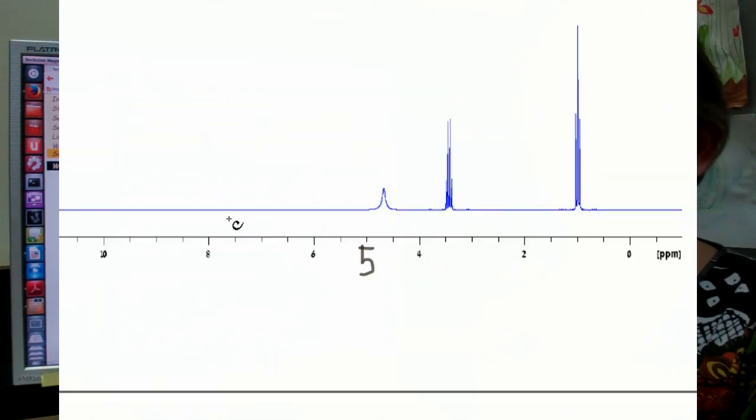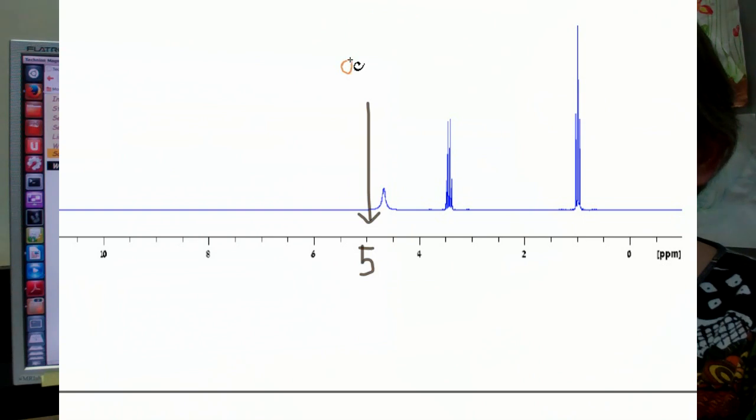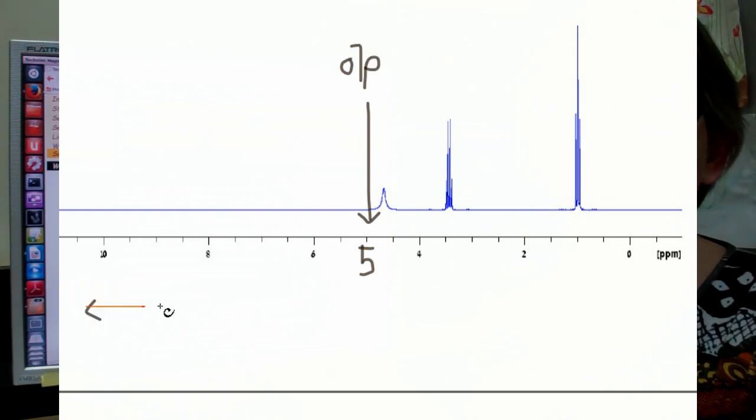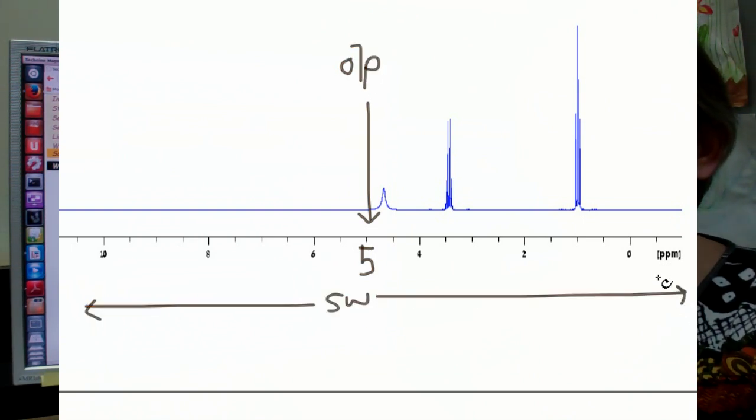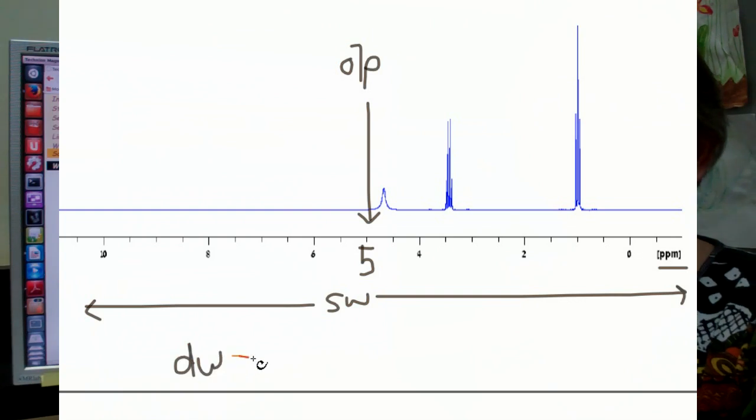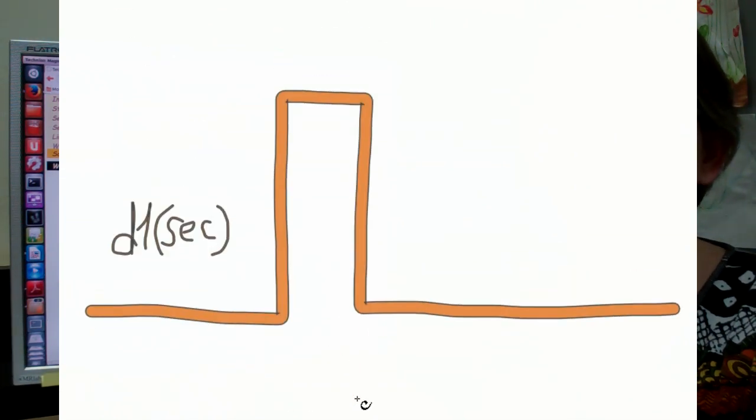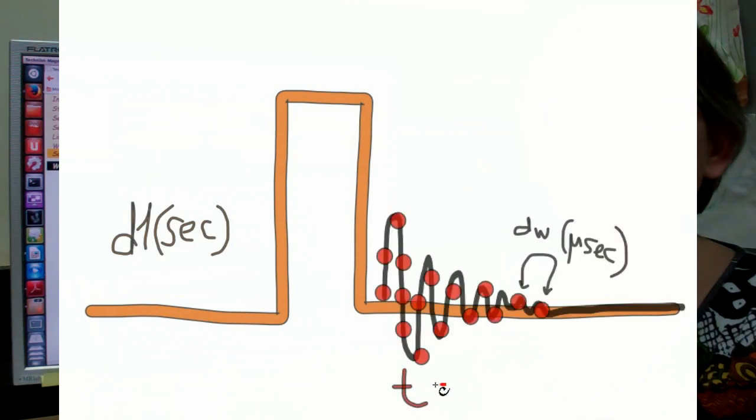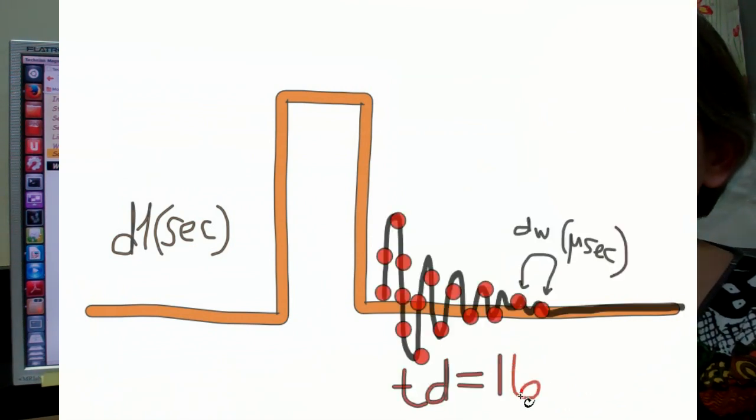Number 2, O1P, which sets the center frequency of your spectrum. Number 3, SW, which sets the spectral width in ppm. This will automatically determine DW, the digitization rate, according to 1 over twice the spectral width in hertz.